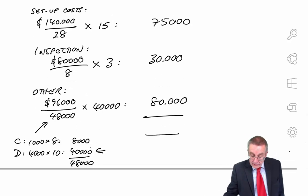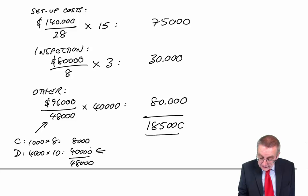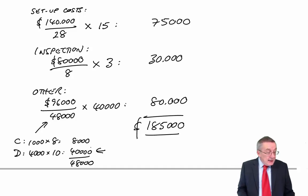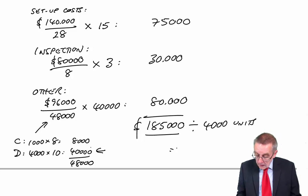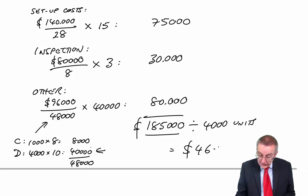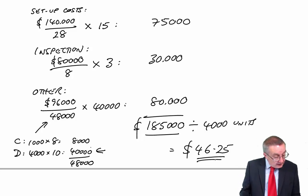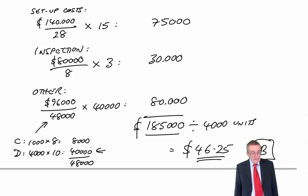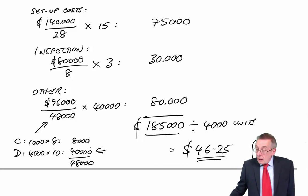So the total overheads for D, 75,000 plus 30,000 plus 80,000 is 185,000. And finally, that's the total overhead for D. We want the overhead cost per unit. Well, we're producing 4,000 units of D, which means the overhead cost per unit, 185,000 divided by 4,000, is 46.25, which is B. Almost there.